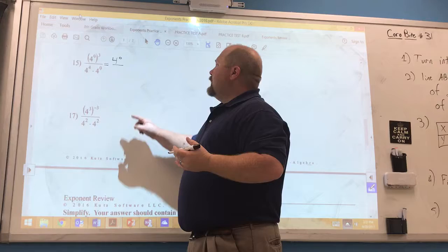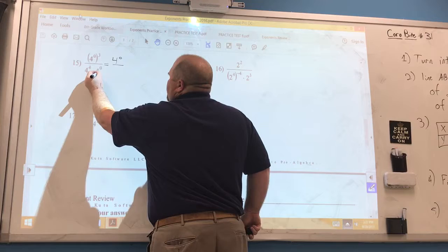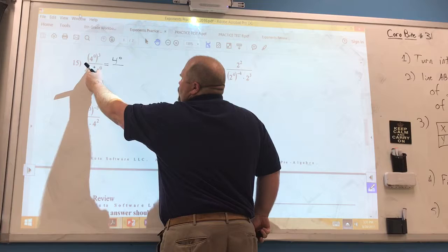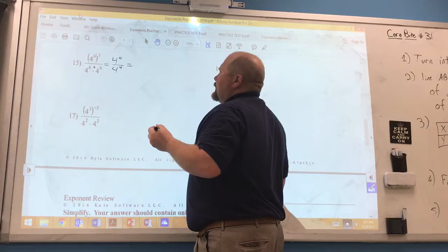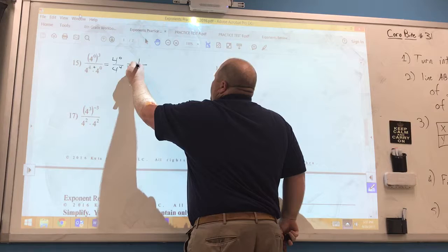On the bottom we have multiplying like bases. When we multiply like bases we add the exponents. So this exponent would be four plus a zero which is simply four to the fourth. At this point we can tell that we're pretty much good to go. We can go ahead and call this one over four to the fourth and that problem would be finished.